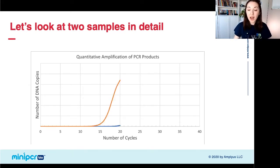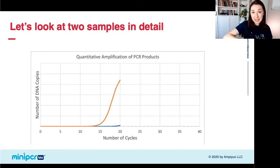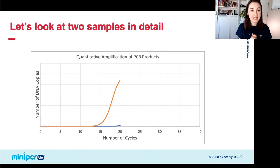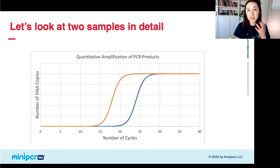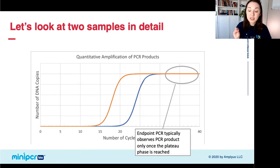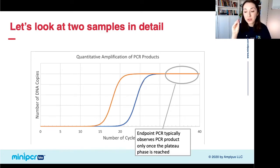Here we have two samples — one in orange and one in blue. The orange one started with more DNA in the tube, so it takes off on that big exponential curve much earlier than the blue tube, which had much less DNA. As we progress through cycles, both tubes amplify and eventually reach the same plateau phase when they run out of resources to keep building more DNA strands. But if we only look at the end of that PCR cycle — which is what gel electrophoresis does — we're observing products once they've reached that plateau, so it's hard to tell the two apart.